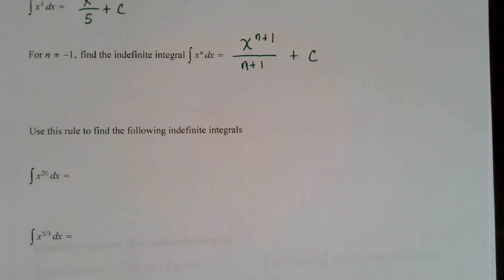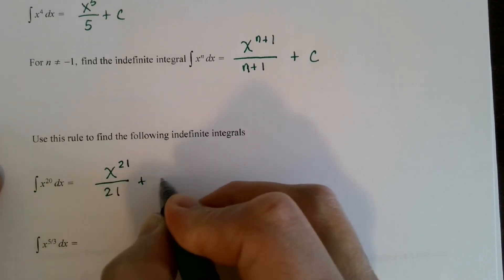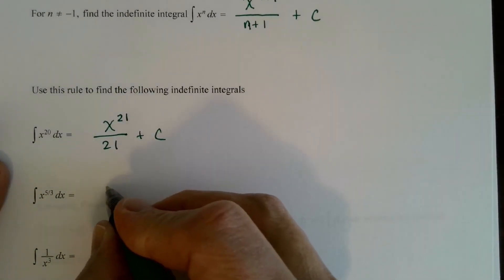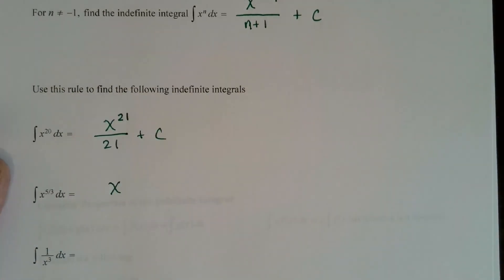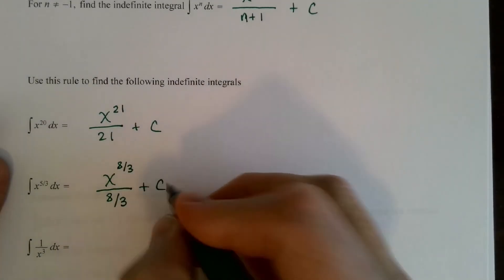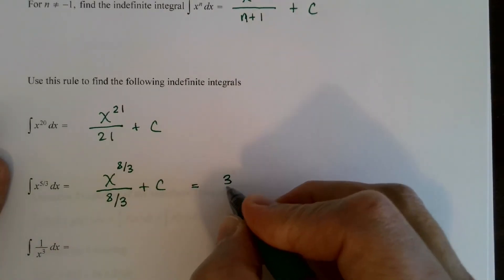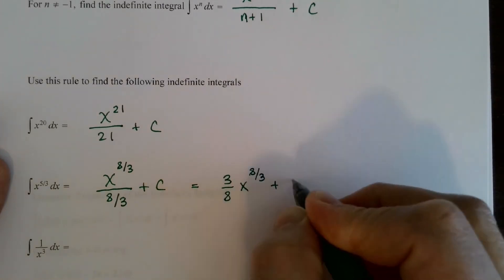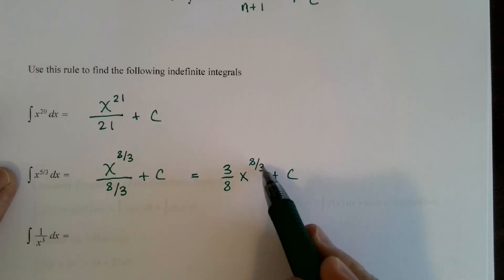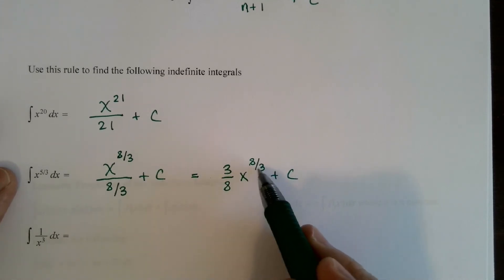Let's find some antiderivatives using this rule. The antiderivative of x to the 20th is x to the 21st divided by 21. For x to the five-thirds power: five-thirds plus 1 is five-thirds plus three-thirds, which is eight-thirds, divided by eight-thirds plus c. Dividing by eight-thirds is the same as multiplying by three-eighths. We can check: pull out three-eighths, bring down eight-thirds; three-eighths times eight-thirds is 1, and subtracting 1 from eight-thirds gives five-thirds — we get back to the original.